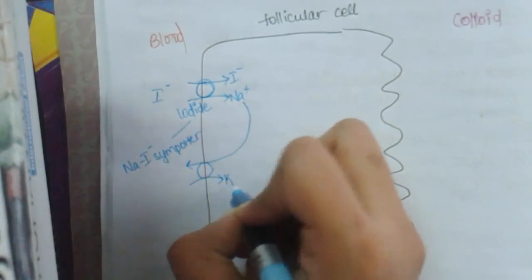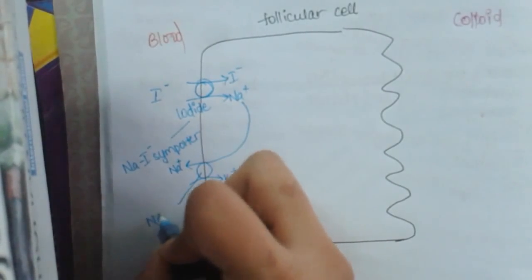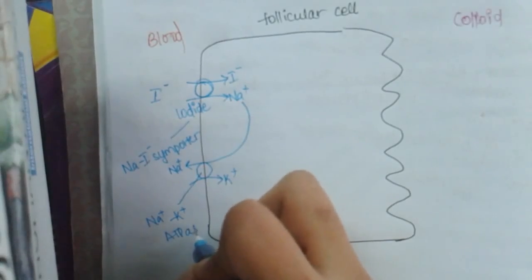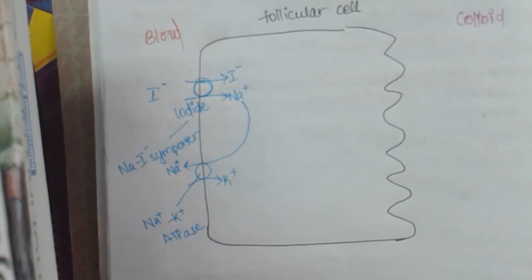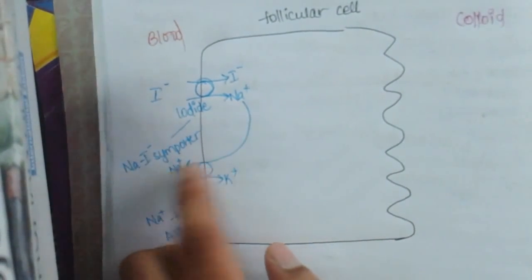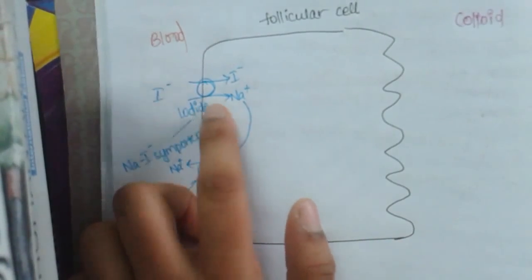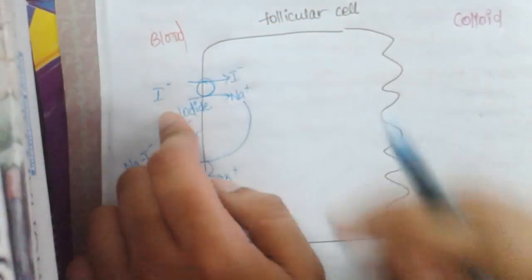Sodium which has entered into the cell, we don't need sodium here, so this sodium is pumped back by sodium potassium ATPase. So this iodine is trapped by the sodium iodine importer. This is not an iodine form, this is in iodide form. I minus is iodide form.